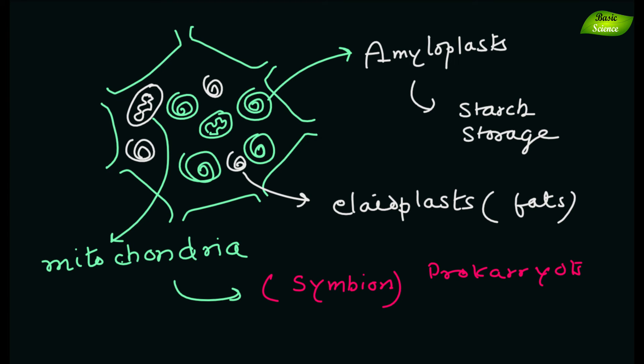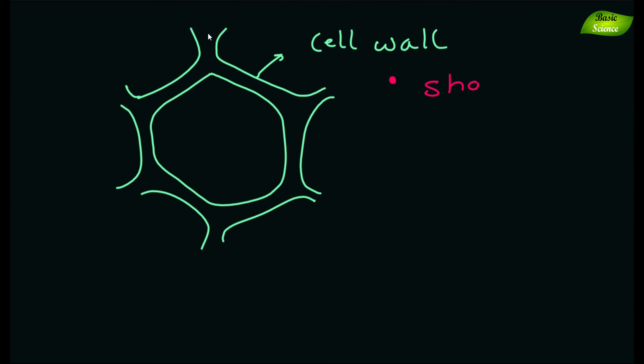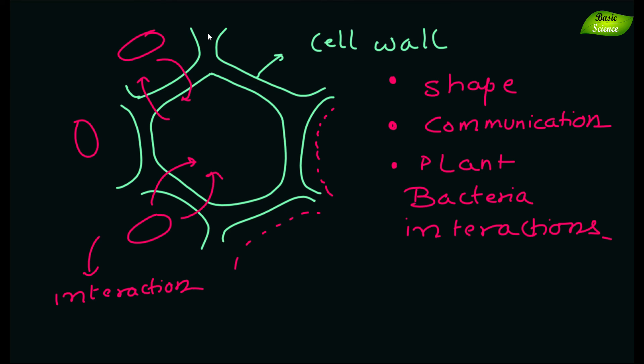Cell walls provide several vital functions. They shape the tissue of the plant and organs. They also play a crucial role in intercellular communication and plant-microbial interactions.